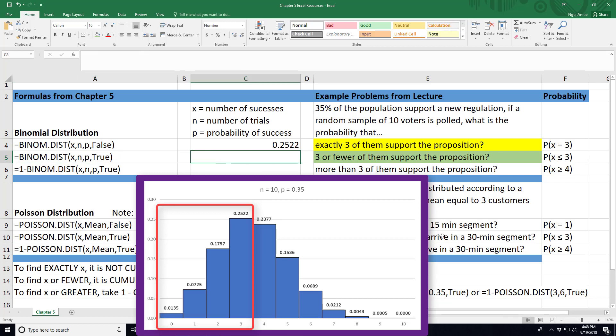So here we type in equals BINOM.DIST parentheses. The number of successes here, we'll type in three. The number of trials, that's our sample size of ten. And our probability is 0.35.